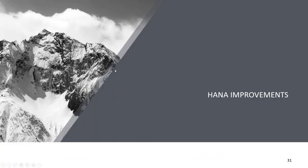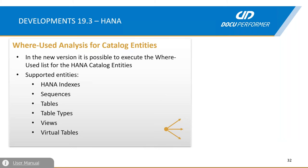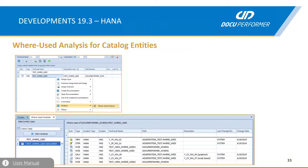HANA improvements: we worked on the where-used analysis for catalog entities. It's now possible to analyze where HANA indexes are being used, where sequences are being used, tables, table types, views, and also virtual tables. The result list of such an analysis looks like this — you can simply select a table and check in which HANA entities it is used.